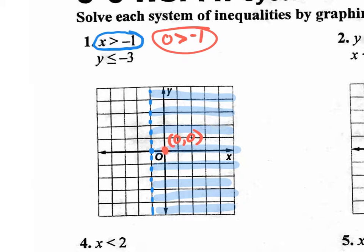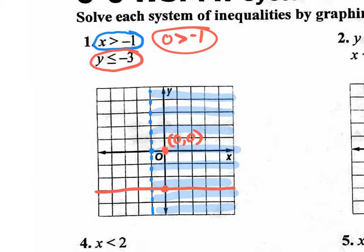Now let's do the other equation in red. This one is a horizontal line — it's y and a number. Y is less than or equal to negative 3, so go to negative 3 on the y-axis and draw a flat line. It's going to be solid because it has 'or equal to.' Now shade: less than means below, so shade below the red line.